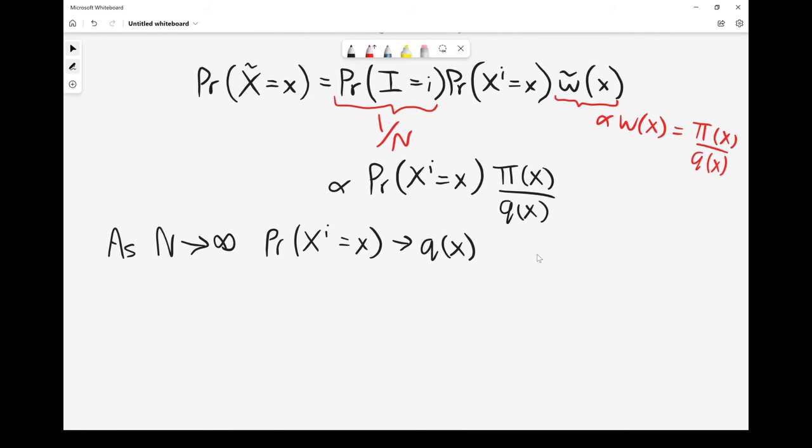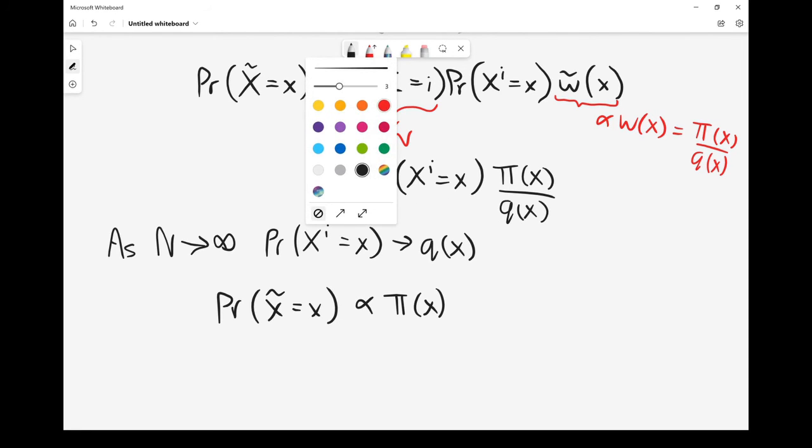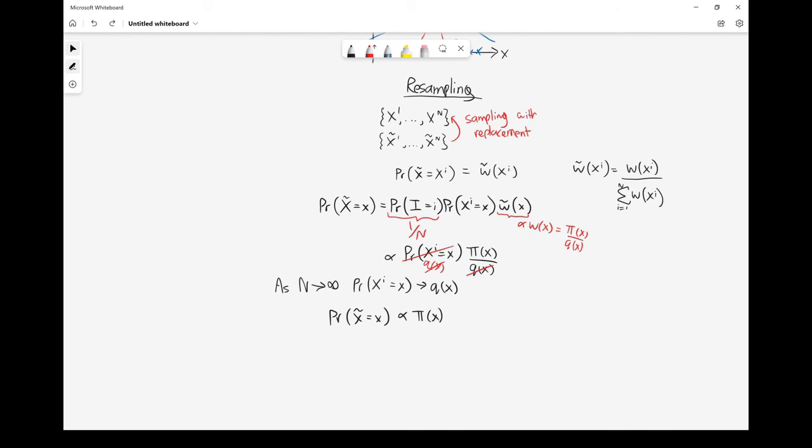So as n gets really large, what we end up with is the probability that one of our new samples equals x is proportional to π(x). Because setting this equal to q(x), it's going to cancel with this, so we end up losing—if we use our asymptotic argument here, then this becomes q(x) and then it cancels with this.